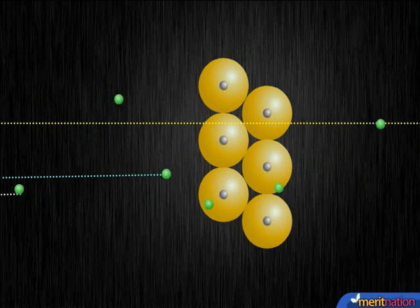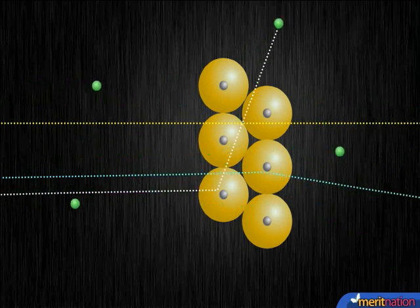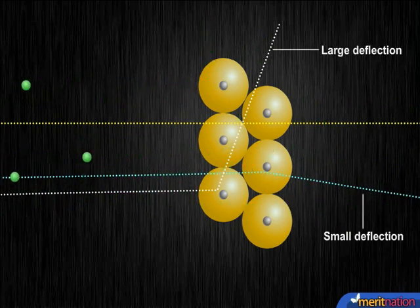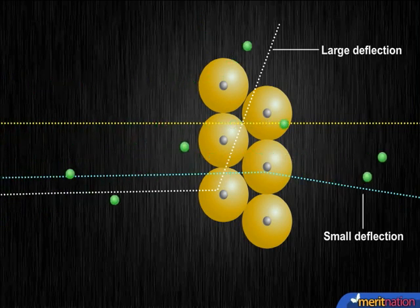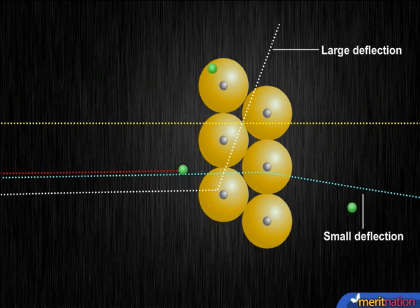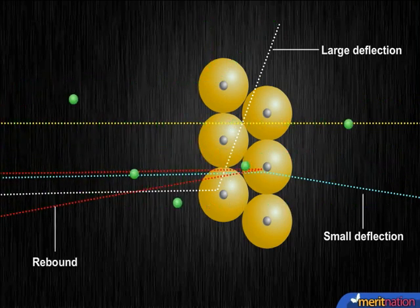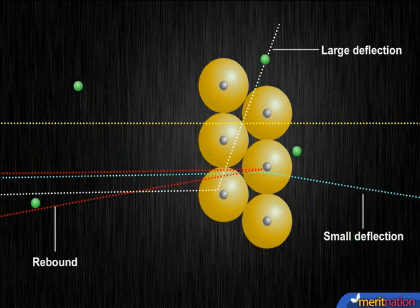Second, very few particles suffered a deflection from their path. This means that positive charge occupies very little space inside an atom. Third and final point, as a small fraction of particles got deflected completely by 180 degrees, all positive charge and mass of gold atoms are present within a very small volume inside the atom.